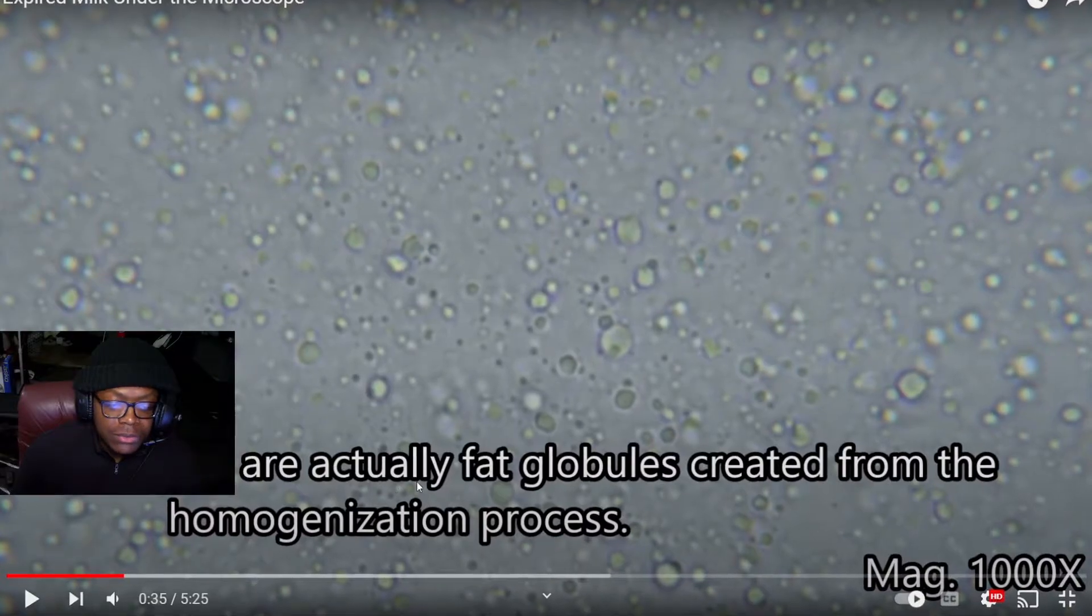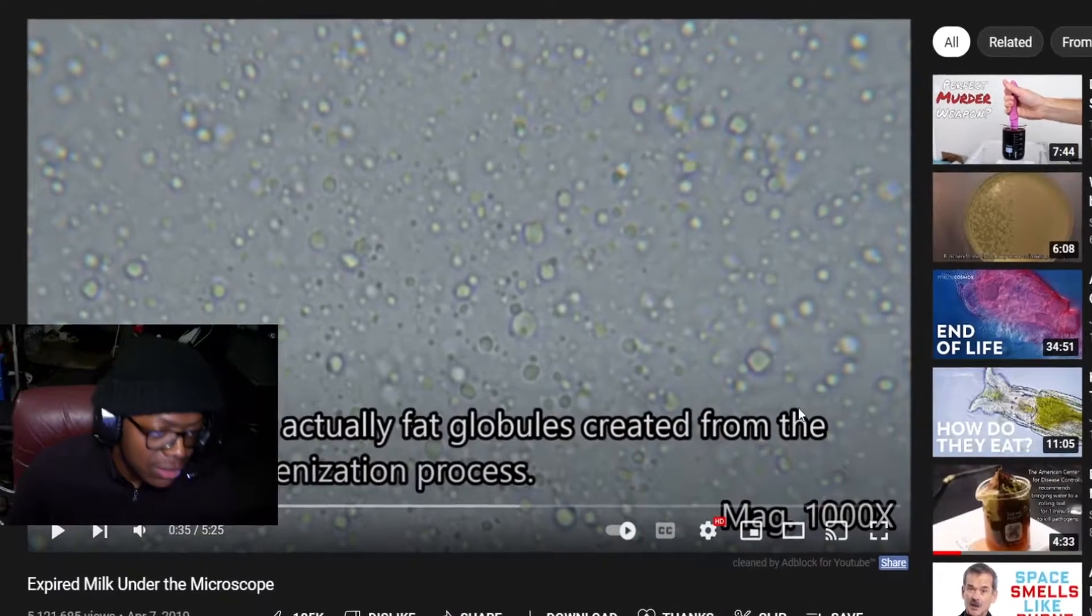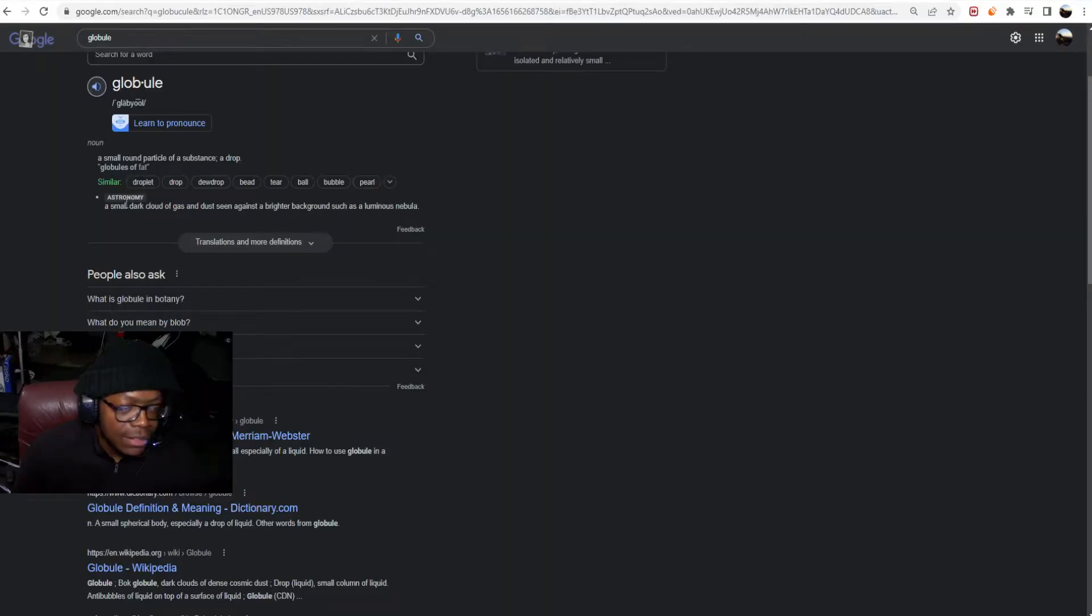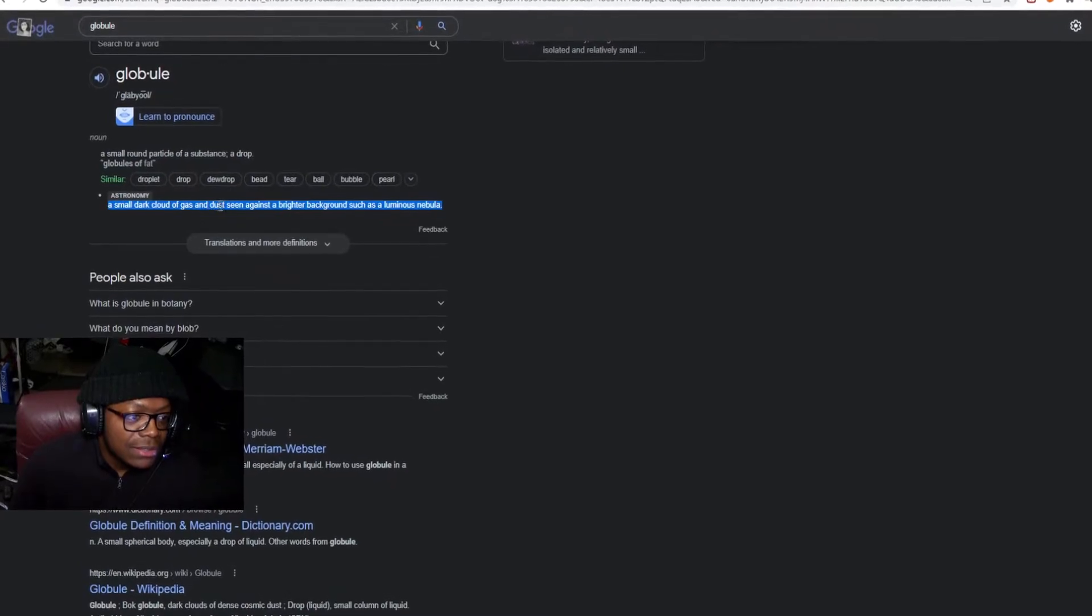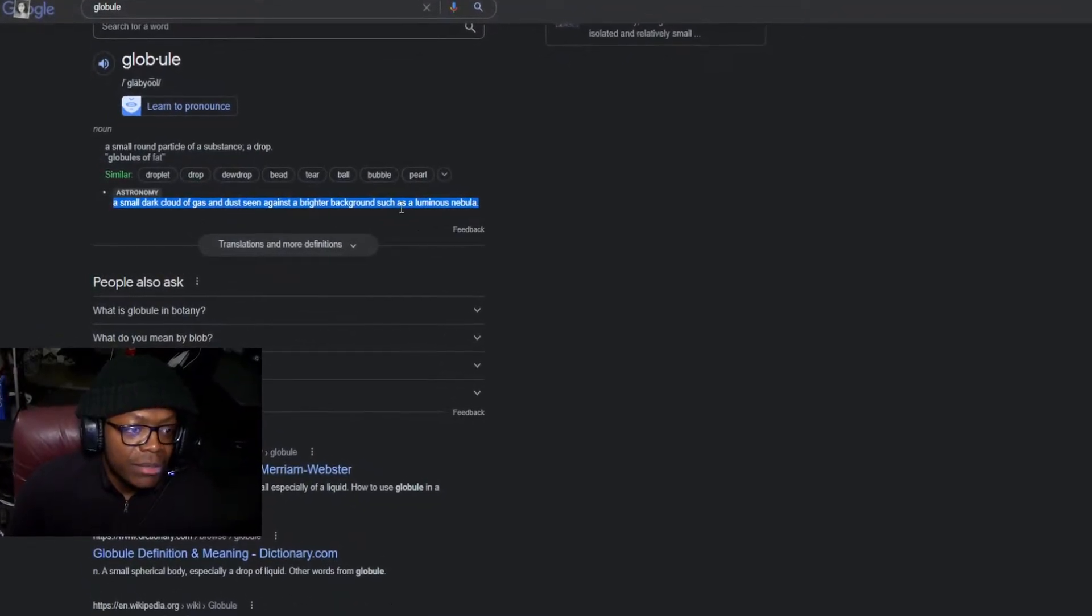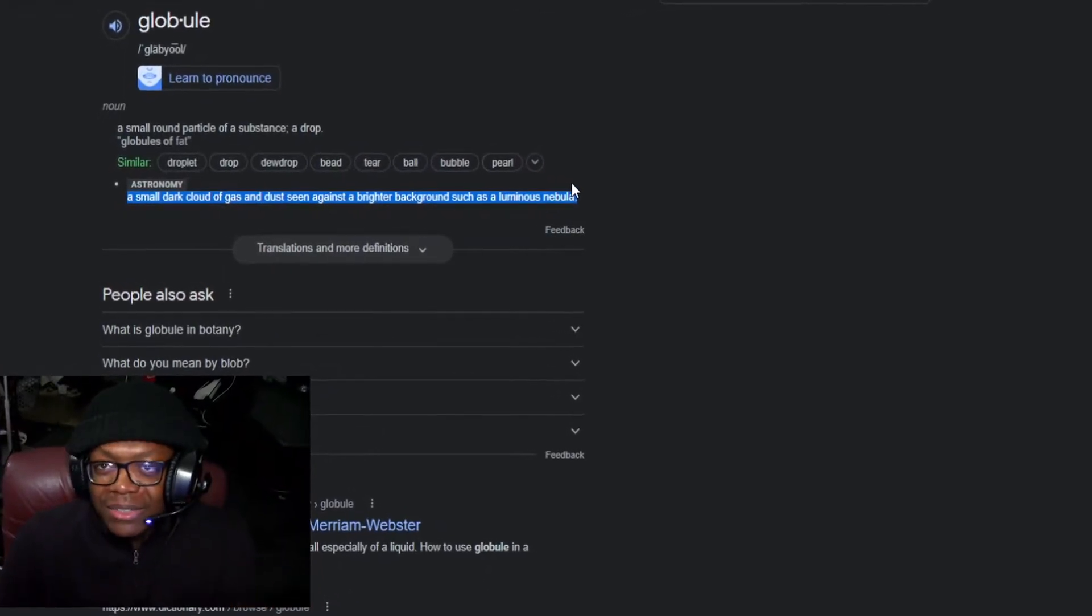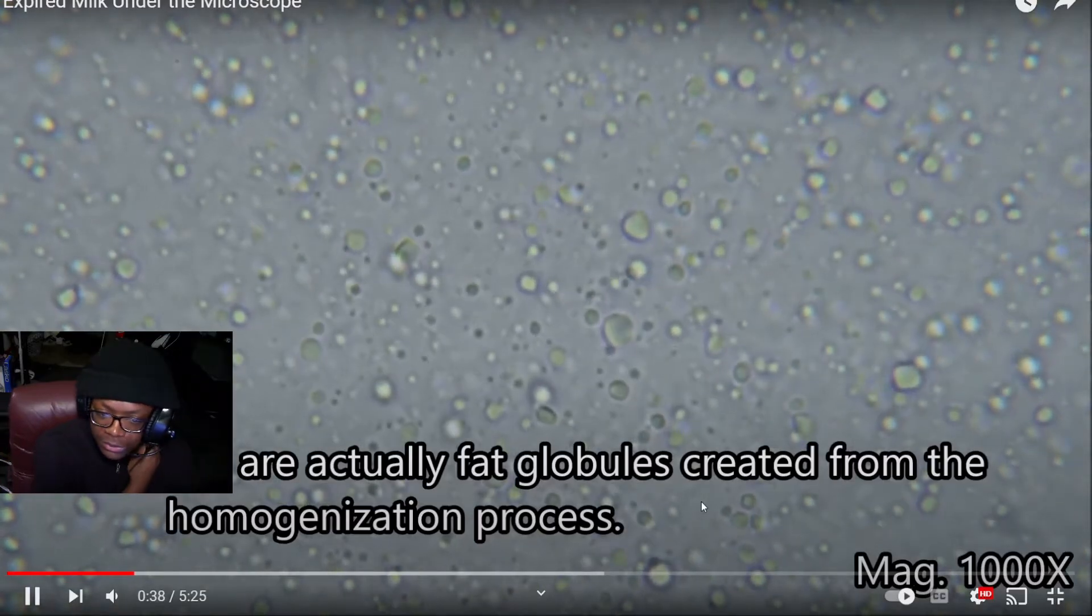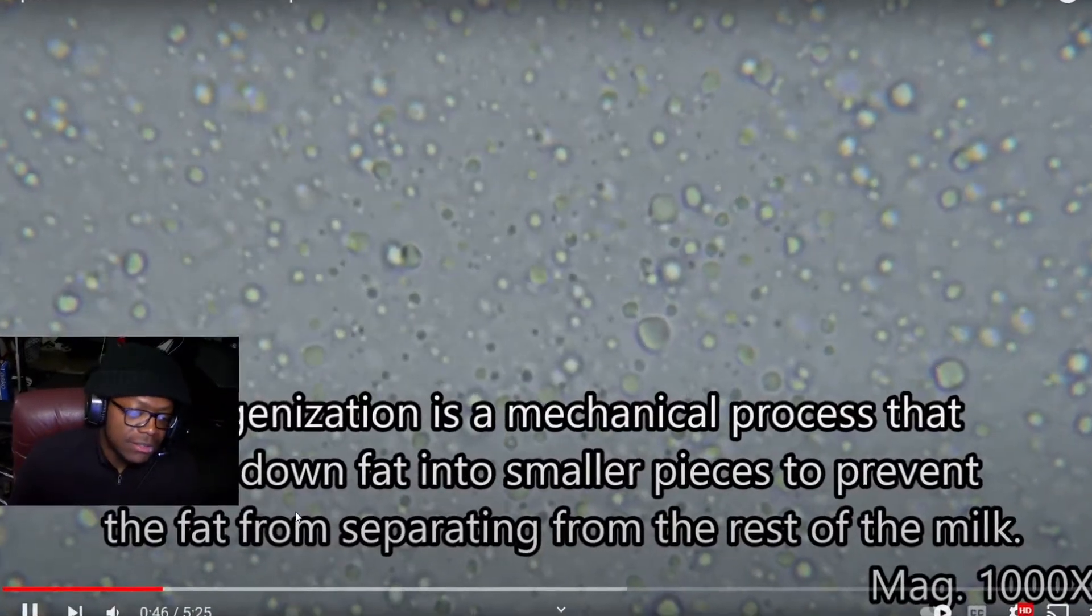These are actually fat globules created from the homogenization process. Globule, globule... I'm dyslexic. Globules are created from the homogenization process, a mechanical process that breaks down fats into smaller pieces to prevent fat from separating from the rest of the milk.